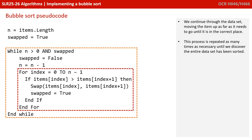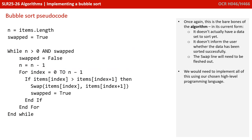This process is repeated as many times as necessary until we discover the entire data set has been sorted. This is the bare bones of the algorithm. In its current form, it doesn't have a data set to sort yet, it doesn't inform the user whether the data set has been sorted successfully, and the swap line still needs to be fleshed out. We would need to implement all of this in our chosen high-level programming language.